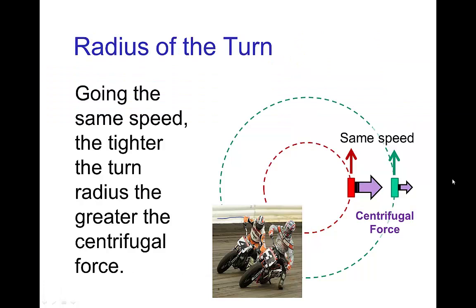One last thing about this effect: if we have two motorcycle riders going the same speed — one on the inside of the turn and one on the outside — going the same miles per hour, the rider on the inside of the turn experiences a greater centrifugal force and would have to lean more to maintain dynamic balance compared to the rider on the outside of the turn.